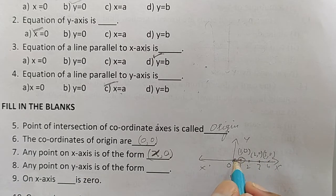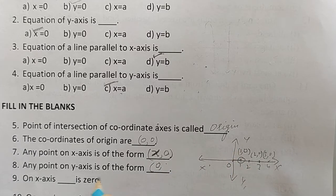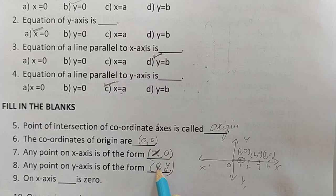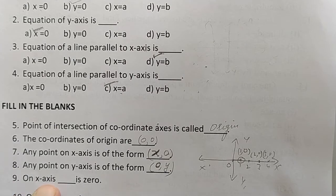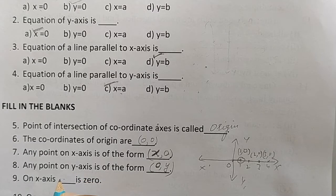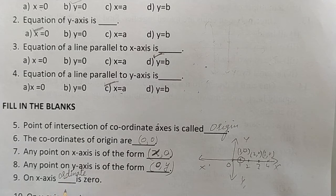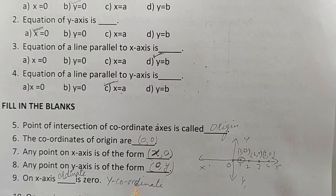Any point on y-axis is of the form (0, y) — for example (0,1), (0,2), (0,3), (0,4). The x-coordinate is always 0 on the y-axis. Also, the y-coordinate is called the ordinate. So on the x-axis, the ordinate (y-coordinate) is 0.